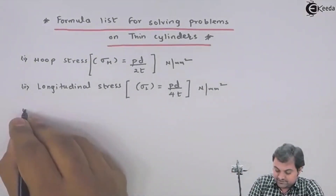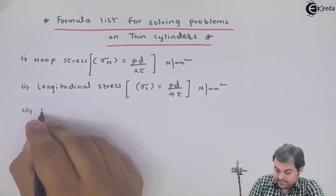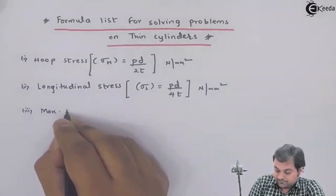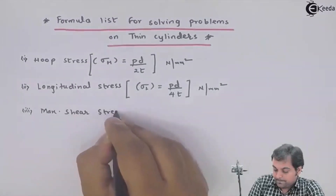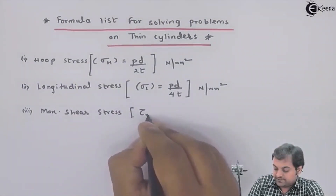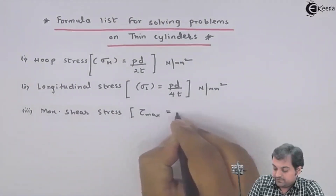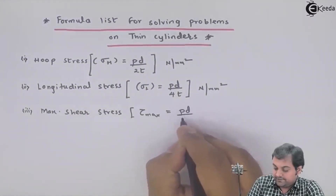Next, shear stress, or maximum shear stress — tau max is equal to Pd upon 8t.